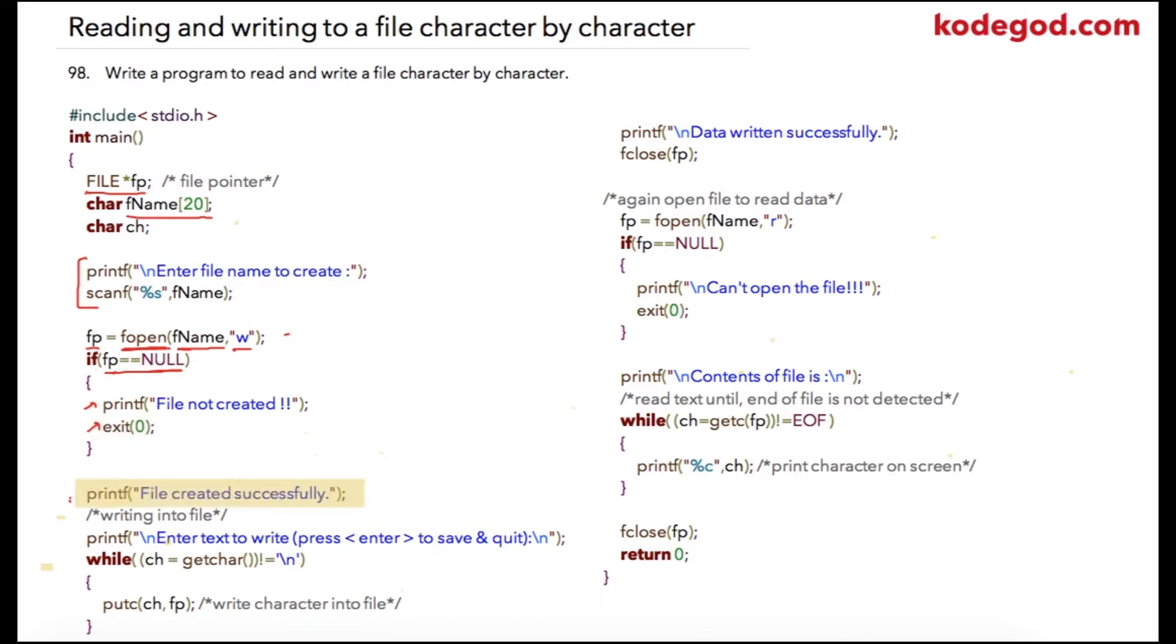Now let's assume that file was created and then we start writing into the file. So we are just going to prompt user that enter text to write and we are also going to tell him that press enter to save and quit. After that I am using a while loop where I am writing ch equals getchar not equal to slash n.